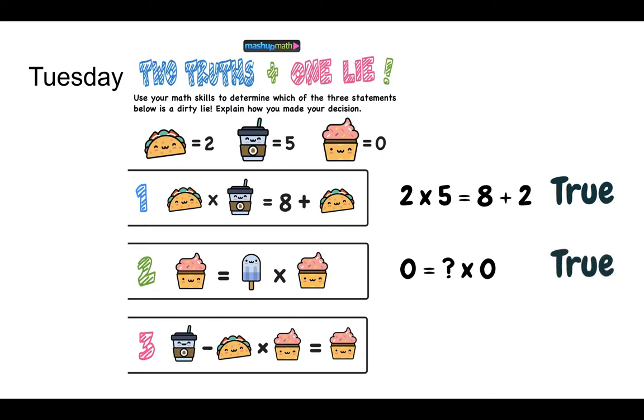In number 3, we've got 5 take away 2 times 0 is 0. And if you do it from left to right, it looks true. But that's not the way we do math. We always do multiplication before we do subtraction. So 2 times 0 is 0. Now 5 take away 0. That's 5. So there's your lie.